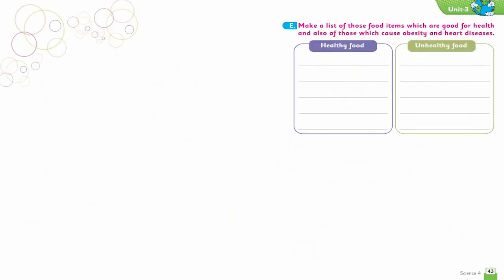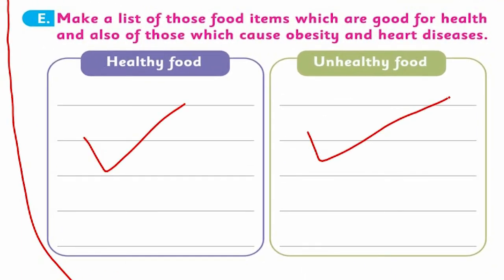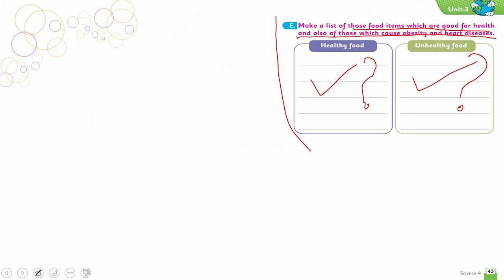There's a small activity. You can do it on this paper or use extra paper. Make a list of food items which are good for health and also those which cause obesity and heart disease. So healthy food and unhealthy food - look around your environment, your routine. When you eat too many noodles, fizzy drinks, and unhealthy food, it becomes unhealthy. Better to eat home cooking. Tell your mama to make healthy food for you. Stay healthy and happy. May Allah give you good life and success, my dear children.